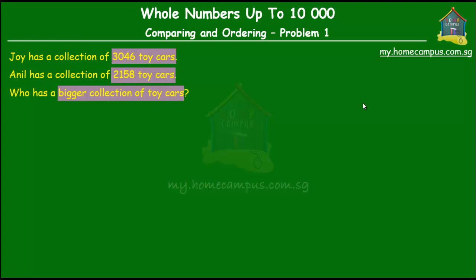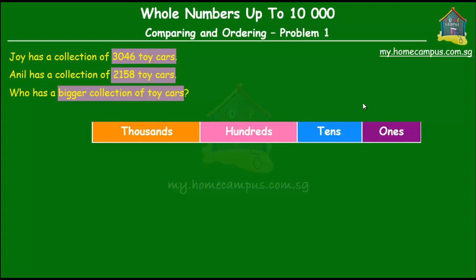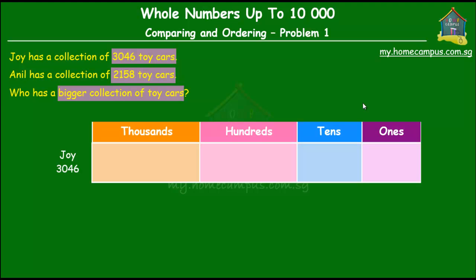So how do we compare? Do we compare the ones, the tens, the hundreds, or the thousands to find out who has a bigger collection? We put the two numbers in our place value chart. Joy has 3,000, nothing in the hundreds, 4 in the tens, and 6 in the ones — so he has 3,046 cars.